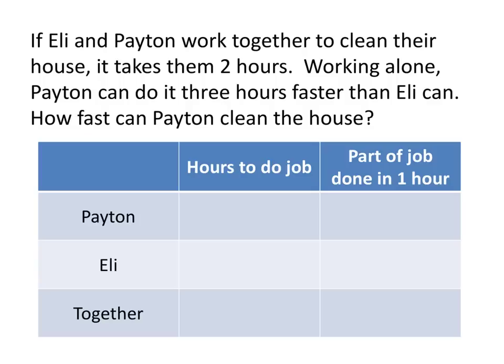We know that when they work together, it takes them two hours to do the job. What we don't know is how many hours it takes Payton to do the job by himself. So we'll call it h for hours. We know that Payton can do this job three hours faster than Eli can, so Eli can do the job in h plus three hours.